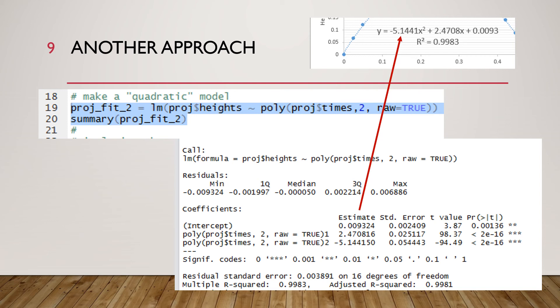And then our third argument is raw equals true which I will ultimately discuss and then end the poly method and end the linear model method. And then in line 20 I'm getting a summary of that and you can see down in the summary then it's producing the same parameters we saw in Excel and from the previous way of doing the polynomial fit.